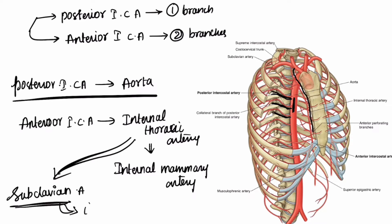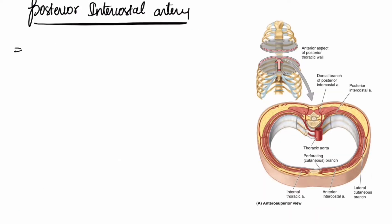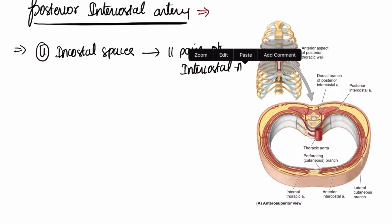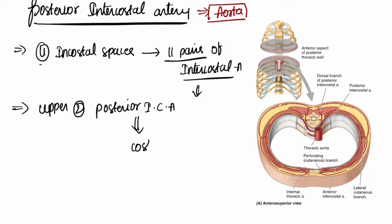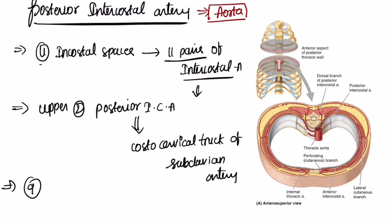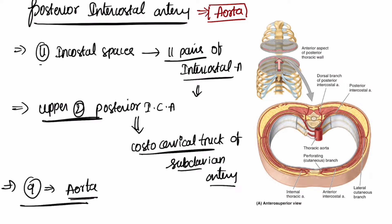The internal thoracic artery is a branch from the first part of the subclavian artery. Now in detail: we have 11 intercostal spaces, so we have 11 pairs of intercostal arteries. Not all 11 pairs are given by the aorta. The upper two posterior intercostal arteries are branches of the costocervical trunk of the subclavian artery, and the remaining nine posterior intercostal arteries arise from the aorta.